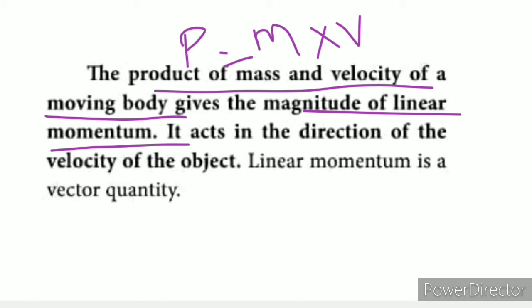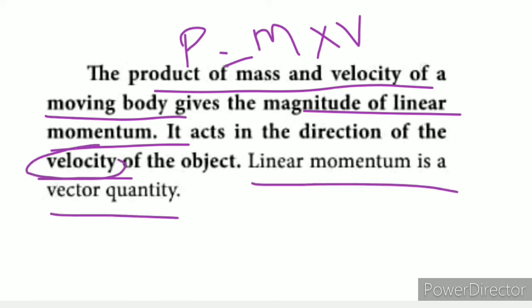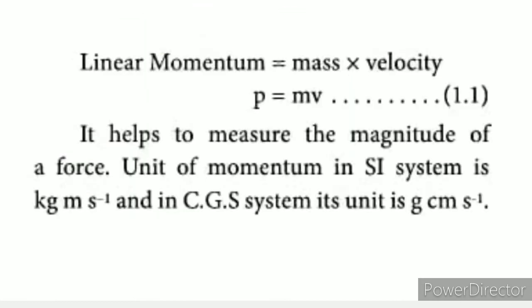The symbol for linear momentum is P. It acts in the direction of the velocity of the object. Linear momentum is a vector quantity because velocity — which is displacement divided by time — has direction. The direction of velocity determines the direction of momentum. The formula is: linear momentum equals mass times velocity, P = mv.